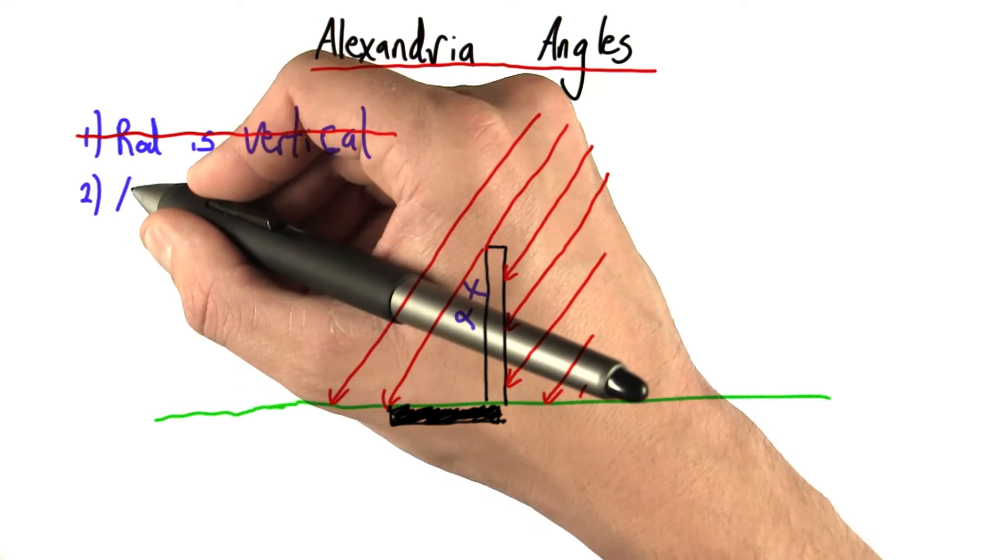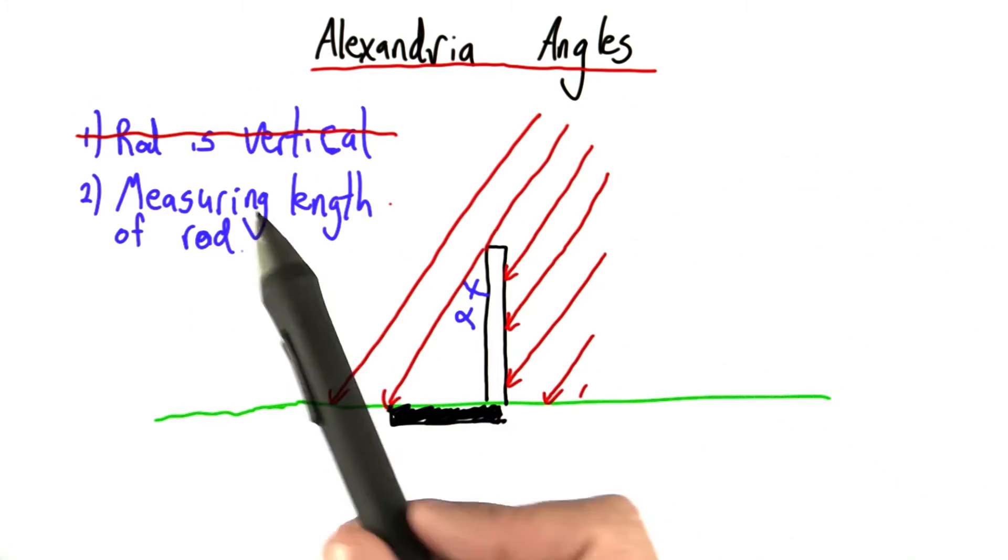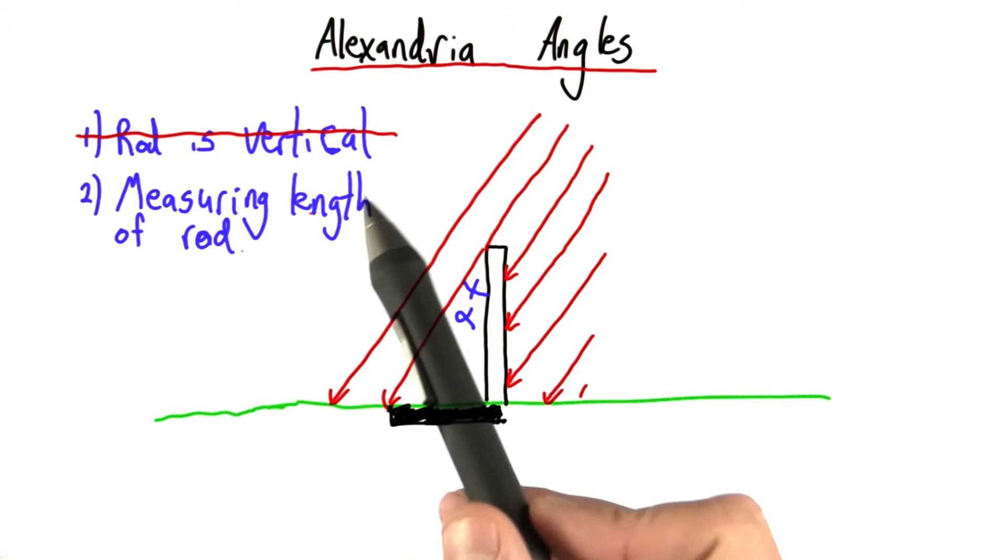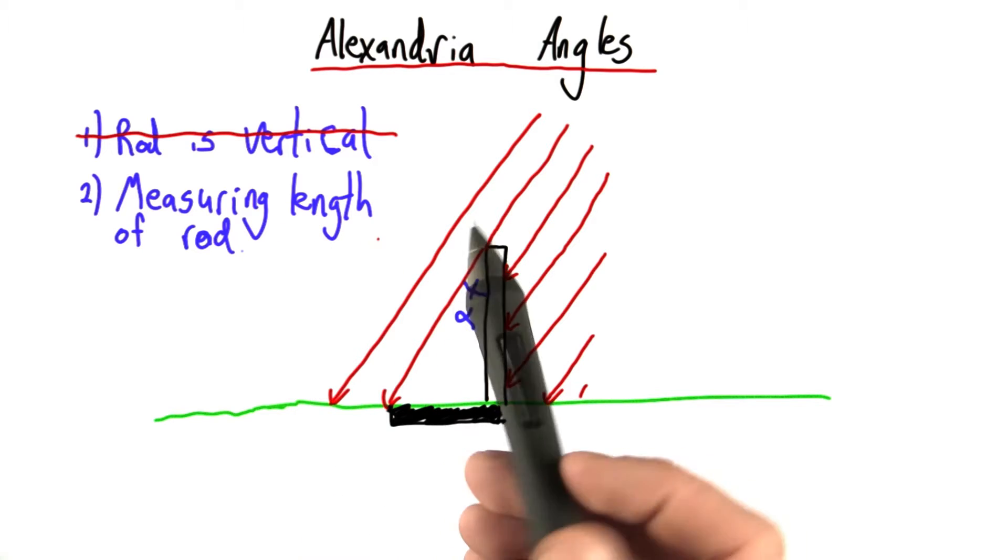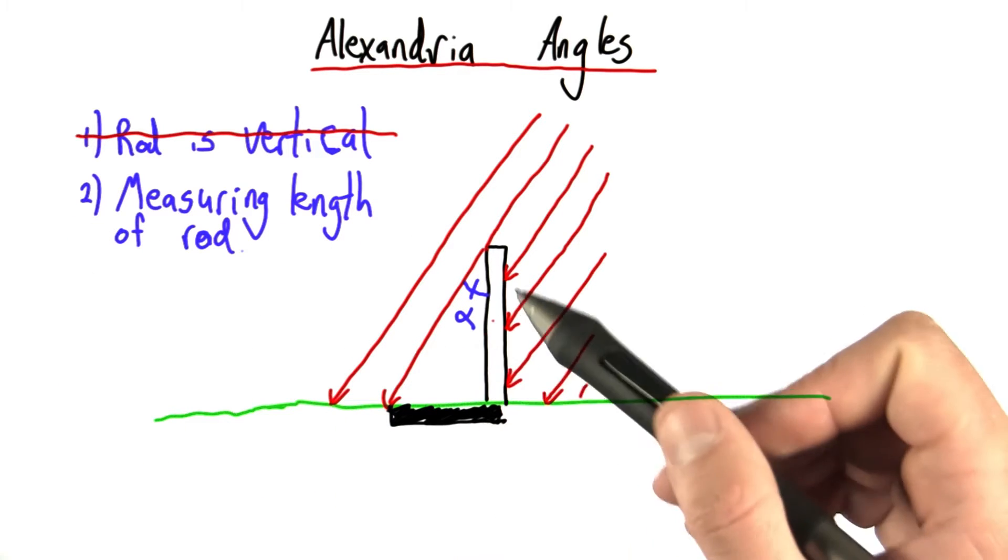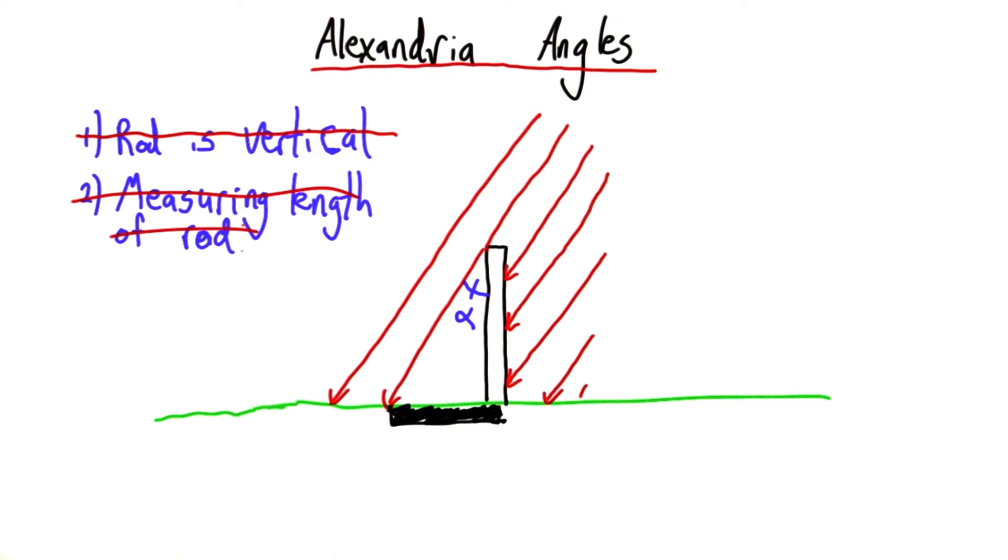The next comes from measuring the rod itself, measuring the length of the rod. Now, we know that nothing can be measured to exact precision, but they had pretty good measuring devices even 2,000 years ago. So, I don't think there's much error introduced in measuring the length of this rod, and I think we can safely say it's negligible and not worry about it.